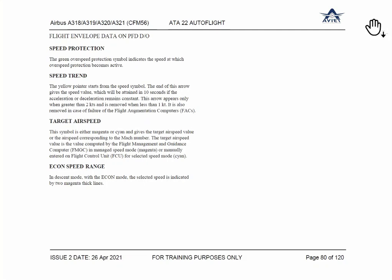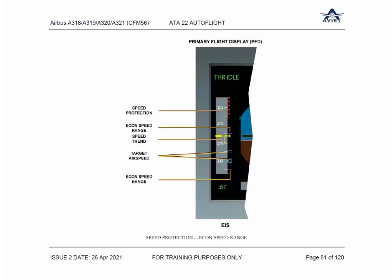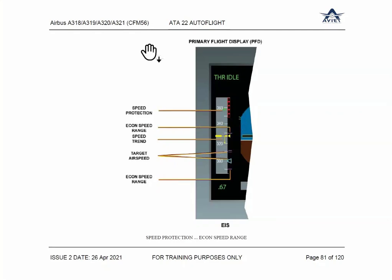These characteristic speeds are functions of the landing gear configuration, and you can see here how they are represented to the captain. Red color wherever you see it is a no-fly zone — a no-fly area. You can see here the speed protection is active and two green bars are visible on the display.